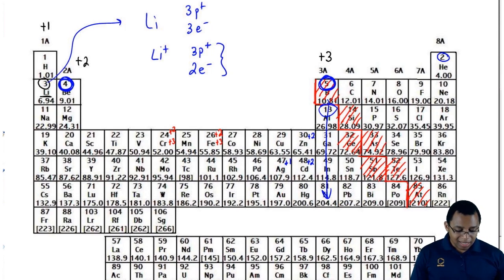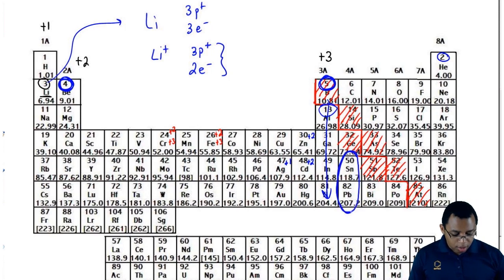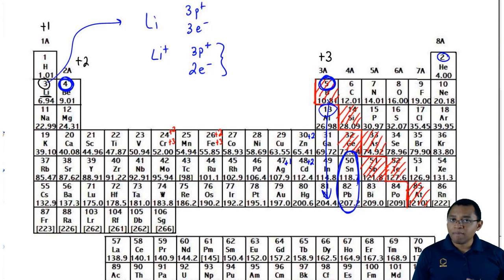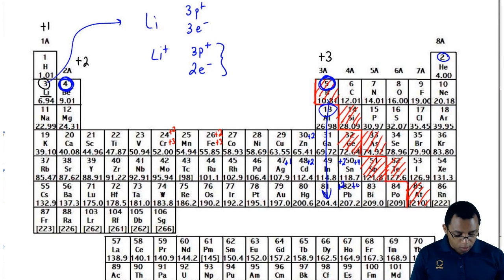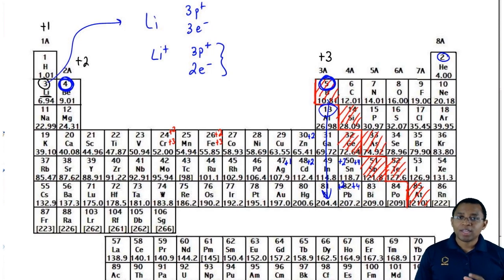Tin (Sn) and lead (Pb), both in group 4A, are not transition metals but they act like them — they have more than one charge. Tin can be either plus two or plus four, and lead can be either plus two or plus four. So Sn and Pb in group 4A are not transition metals, but they behave like type two metals.